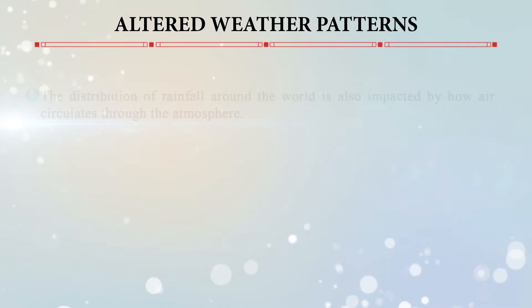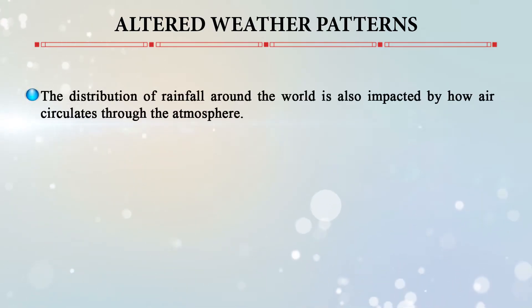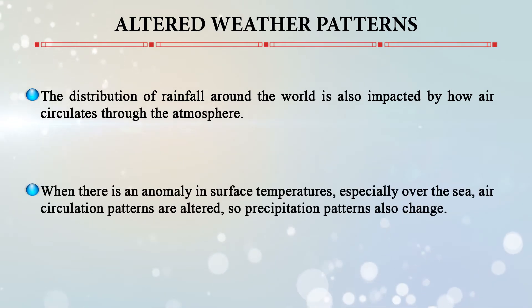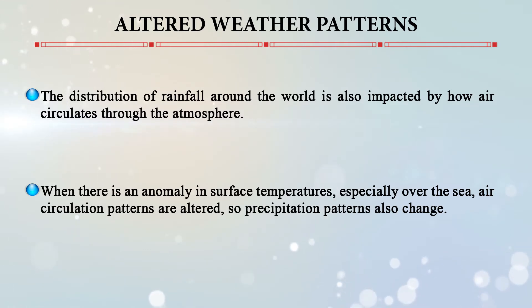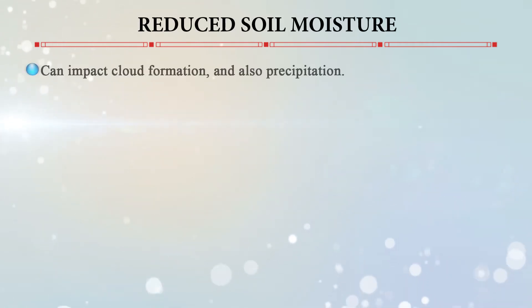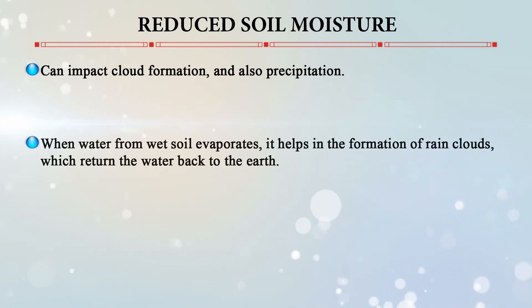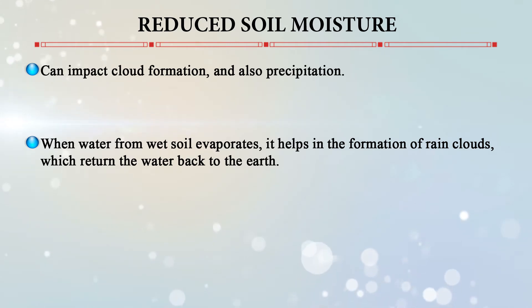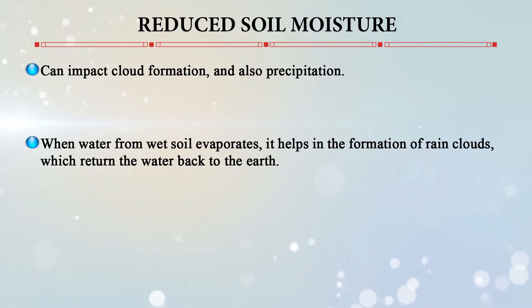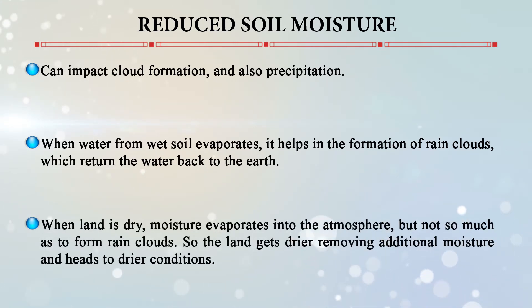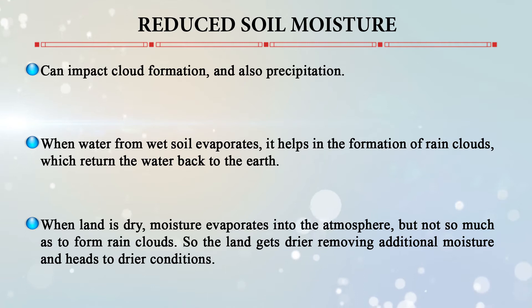Altered weather patterns also contribute — the distribution of rainfall is impacted by how air circulates through the atmosphere. Anomalies in surface temperatures, especially over the sea, alter air circulation patterns and therefore precipitation patterns. Reduced soil moisture can also impact cloud formation and precipitation: when land is dry, moisture evaporates into the atmosphere but not enough to form rain clouds, making the land even drier and leading to progressively drier conditions.